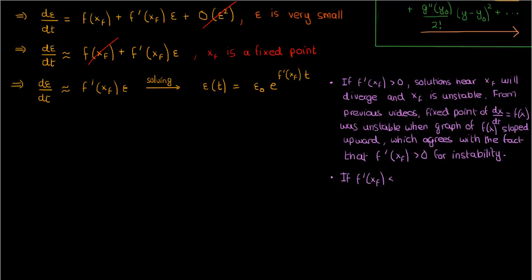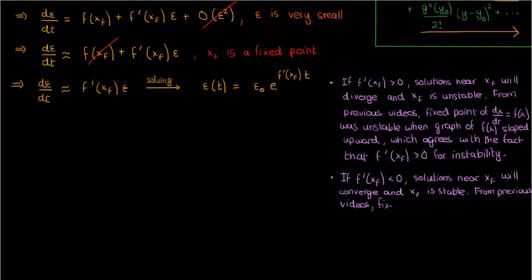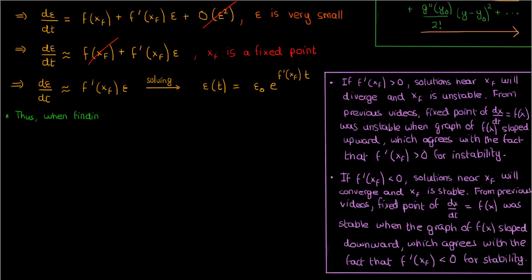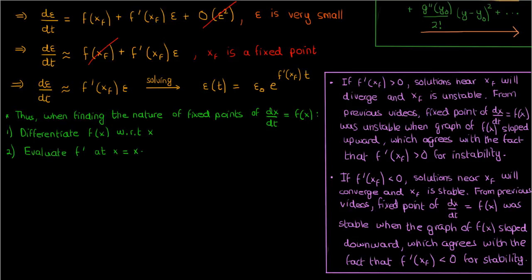By a similar logic, when f'(x_f) is less than 0, the exponent is negative, so as time increases the perturbation epsilon will decay and trajectories converge to x_f. As a result, x_f is a stable fixed point, and the graph of f(x) will have a negative slope at stable fixed points. So all we have to do is differentiate f(x) with respect to x, evaluate f' at the fixed point, and determine the sign: if positive, the fixed point is unstable; if negative, it's stable.